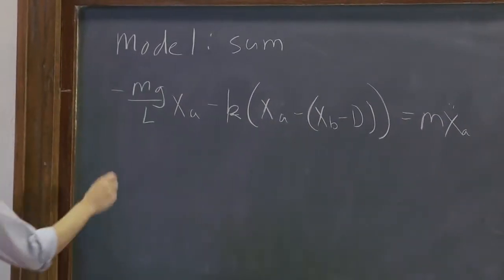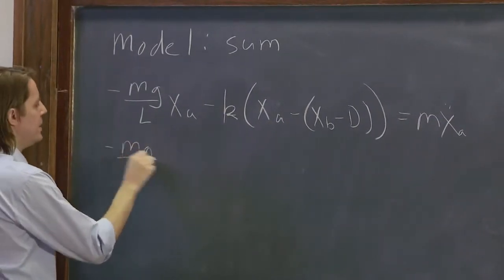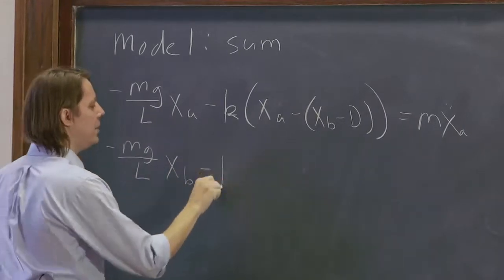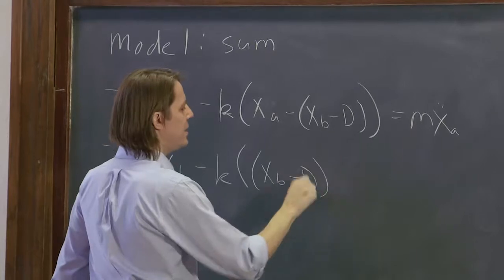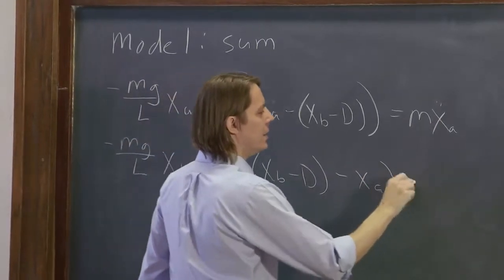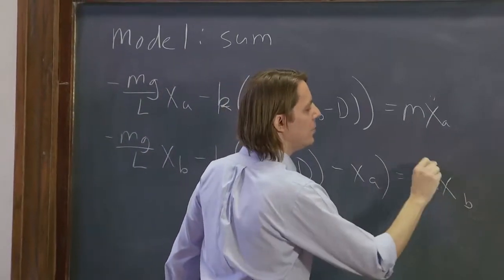And the other one was minus mg over L, xB minus k times xB minus d minus xA equals m xB double dot.